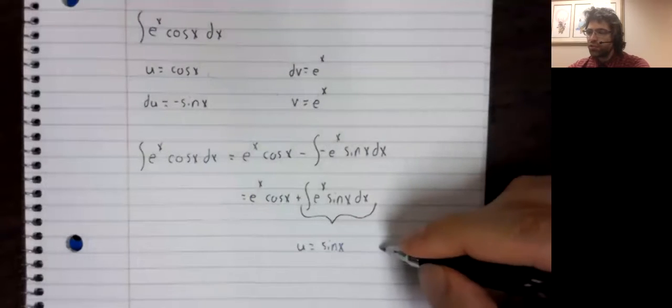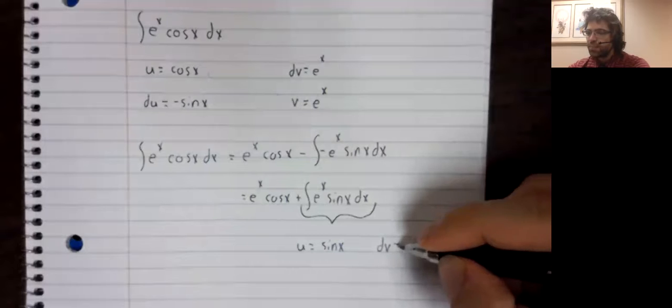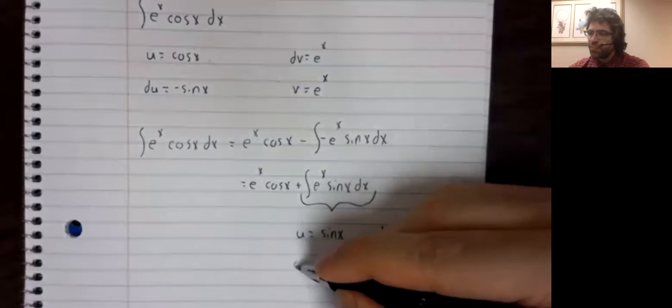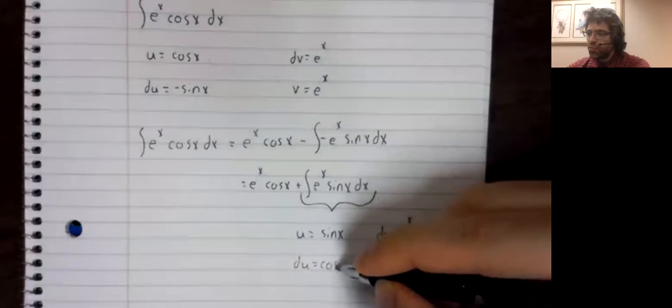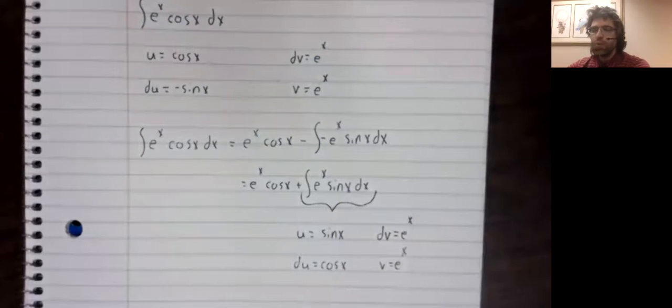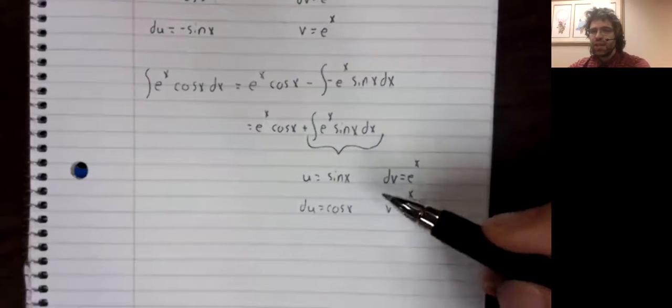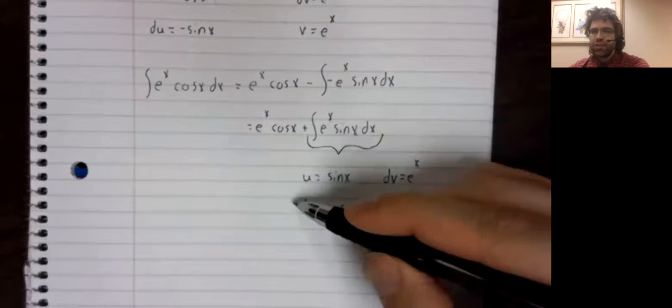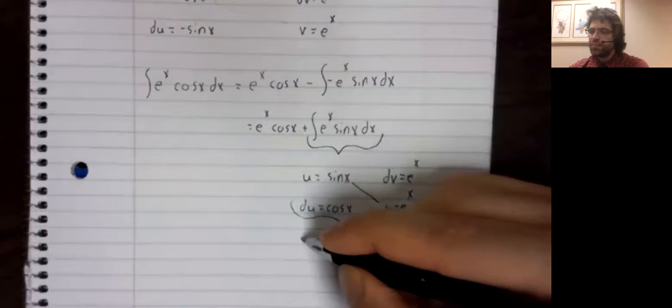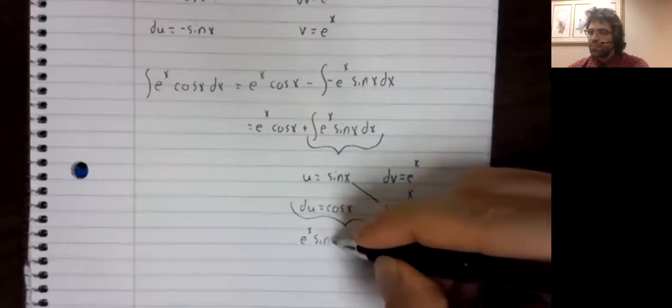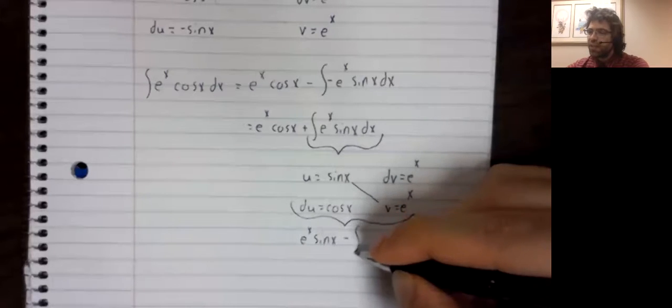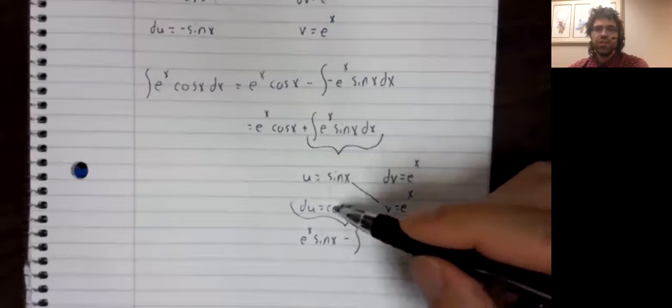U will be the trig function, dv be the exponential function. Du is the cosine of x, v equals e to the x. And this integral then is u times v, e to the x times the sine of x, minus the integral of v du.